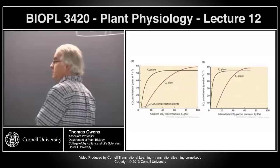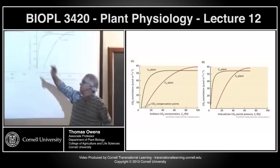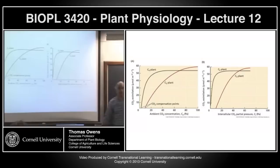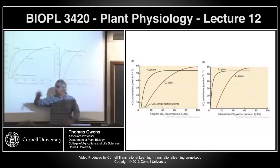So we left off last time talking about graphs that compare the rate of photosynthesis as CO2 fixation — you could also plot oxygen evolution, sugar production, or rate of electron transport. They would all be proportional to each other as a function of either external ambient CO2 concentration or internal CO2 concentration. We recognize that C4 plants have lower compensation points, where the rate of respiration and the rate of photosynthesis balance each other, giving a net CO2 fixation or net oxygen evolution of zero.